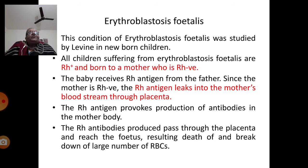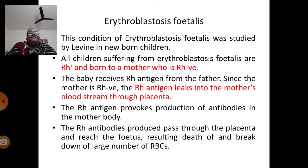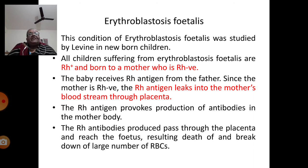All children suffering from erythroblastosis fetalis were found to be Rh positive, and they were born to an Rh negative mother. The baby receives the Rh antigen from the father — from the paternal side — but the mother is Rh negative. This Rh antigen leaks into the mother's bloodstream through the placenta and provokes the production of antibodies in the mother's body. The Rh antibodies produced pass through the placenta and reach the fetus, resulting in the breakdown of a large number of RBCs — a process called hemolysis.